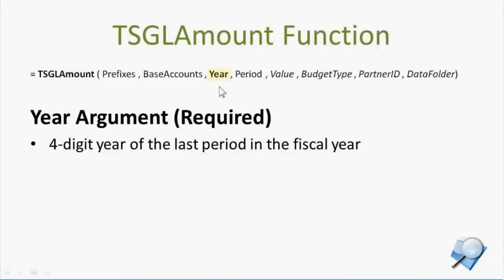The year argument — for right now, this is the fiscal year. This will be the fiscal year of the last period of the fiscal year. So in other words, if your fiscal year ends September 30th, you'd be in fiscal year 2015 because your year is going to end September 30th of 2015. So that's the fiscal year — the year of the fiscal year ending date of the desired year that you want to report.